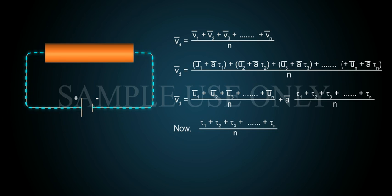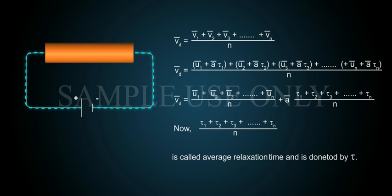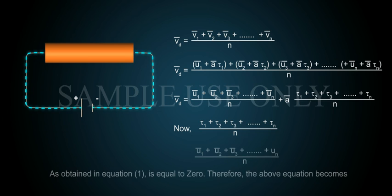Now, (tau1 plus tau2 plus tau3 plus so on plus tau n) by n is called average relaxation time and is denoted by tau. As obtained in equation 1, (u1 bar plus u2 bar plus u3 bar plus so on plus un bar) by n is equal to zero.